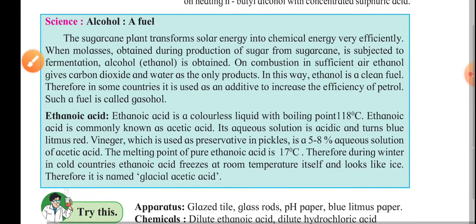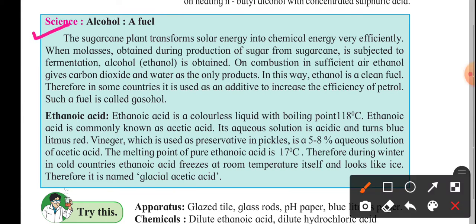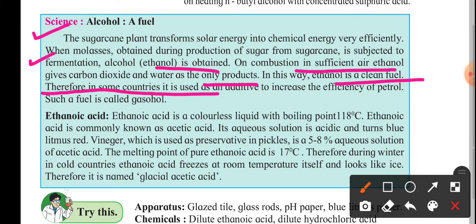Next is ethanol as a fuel. A sugarcane plant transforms solar energy into chemical energy very efficiently. When molasses obtained during sugar production from sugarcane is subjected to fermentation, alcohol is obtained. On combustion in sufficient air, ethanol gives carbon dioxide and water as the only products — making it a clean fuel. In some countries it is used as an additive to increase the efficiency of petrol; such fuel is called gasohol.